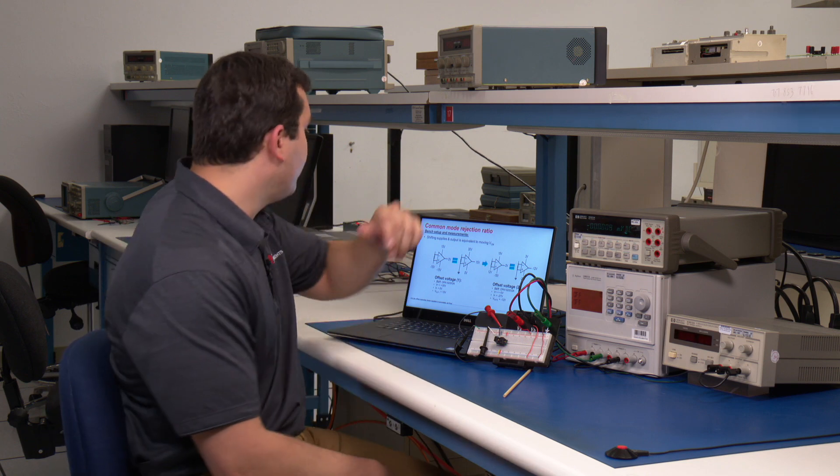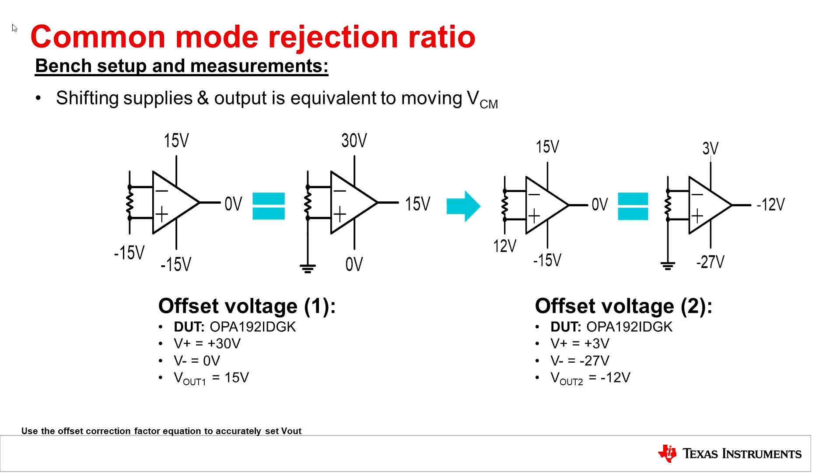Now that we have defined common mode rejection ratio, let's review the test conditions to measure common mode rejection ratio in this example. In this demo, we will measure CMRR, but it's important to note that we can measure CMRR and shift the common mode simply by shifting the supplies and output voltage as defined in the figures provided.